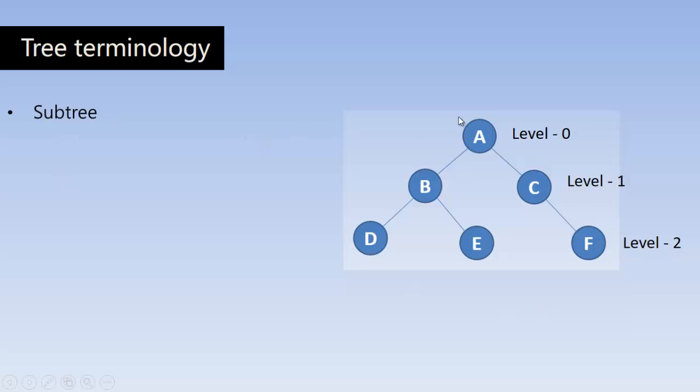Subtree is the tree inside another tree. You can call a node as a subtree if it has at least one child to it. Here, B is a subtree, C is also a subtree. So subtree is a tree inside the tree.